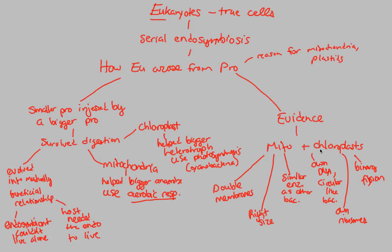Overall, we now see the origins of eukaryotes. The process of serial endosymbiosis allowed us to figure out the prokaryotic origins of eukaryotes, and now we understand where these true cells came from.